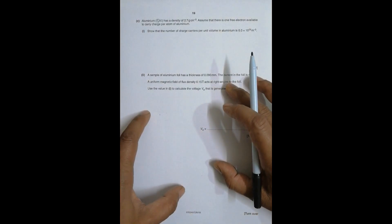Now come some numerical parts. It says that aluminum-27 has a density of 2.7 grams per cubic centimeter. Assume that there is one free electron available to carry charge per atom of aluminum. So with this data we have to find the number of charge carriers per unit volume of aluminum.